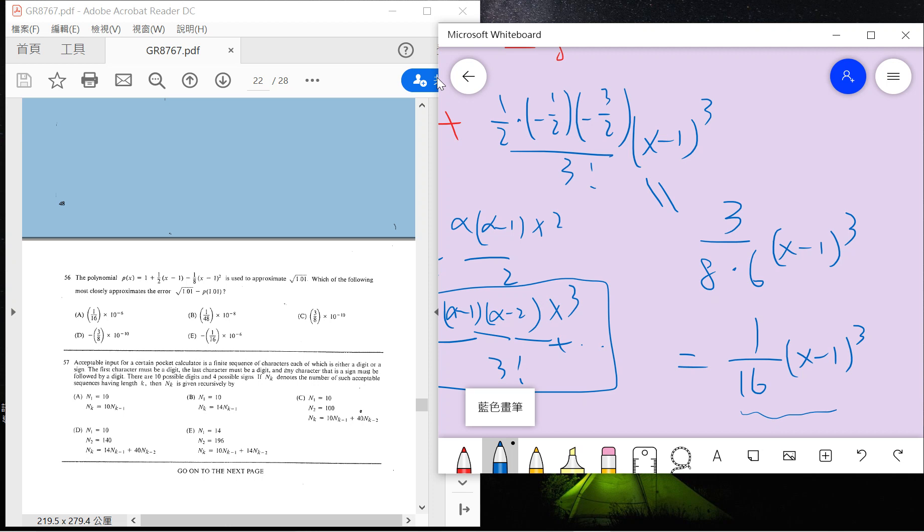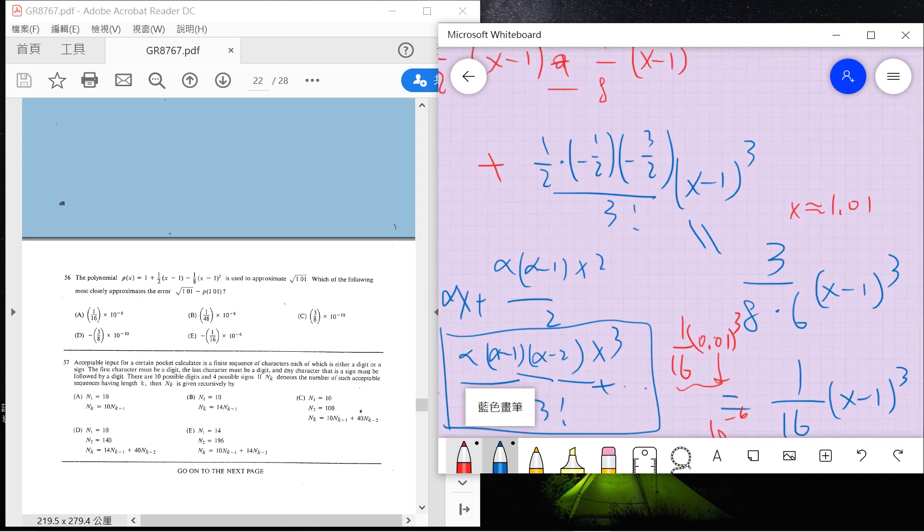And now this is the error term. So x now is 1.01, so the error term is 1 over 16 times 0.01 cubed. So it means that if you use the third term approximation to approximate this 0.01...